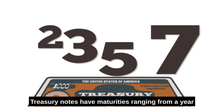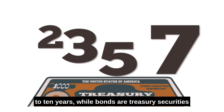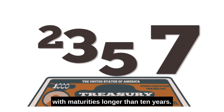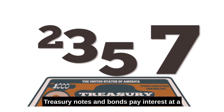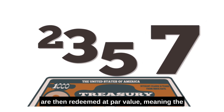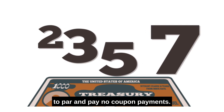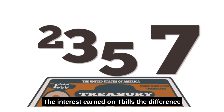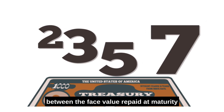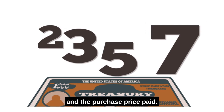Treasury Notes have maturities ranging from a year to 10 years, while bonds are Treasury securities with maturities longer than 10 years. Treasury Notes and bonds pay interest at a fixed rate every 6 months to maturity and are then redeemed at par value, meaning the Treasury repays the principal it borrowed. In contrast, T-bills are issued at discounts to par and pay no coupon payments.